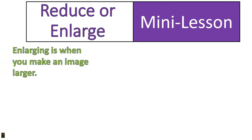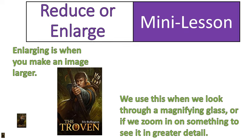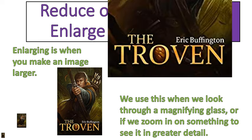When we enlarge something, that's when you make an image larger or bigger. We use this when we're looking through a magnifying glass or a microscope, or if we zoom in on something to see greater detail. For example, that tiny little rectangle you might have noticed in the far left bottom corner there. Let's zoom in a little bit more. There we go. It's the cover of a book. And if we zoom in even more, we can see that I wrote that book. This is what we do sometimes with scale images.